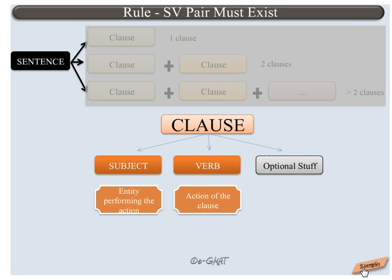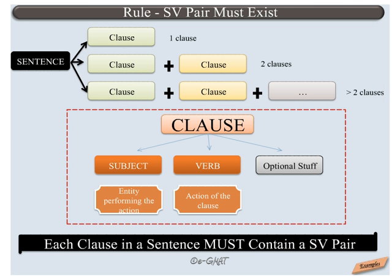In addition to subject and verb, a clause may contain other elements like adverbs, adjectives, prepositions, etc. Thus, each clause in a sentence must contain a subject-verb pair. For example, if a sentence has two clauses, it should have two subject-verb pairs.